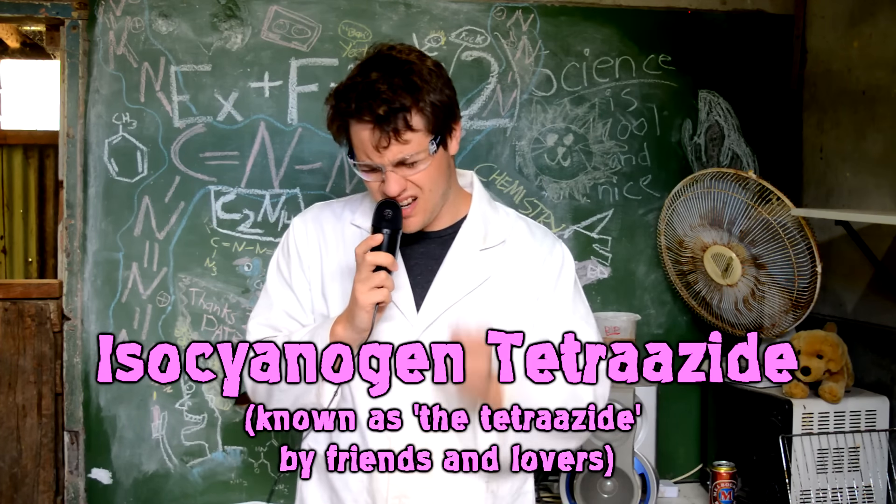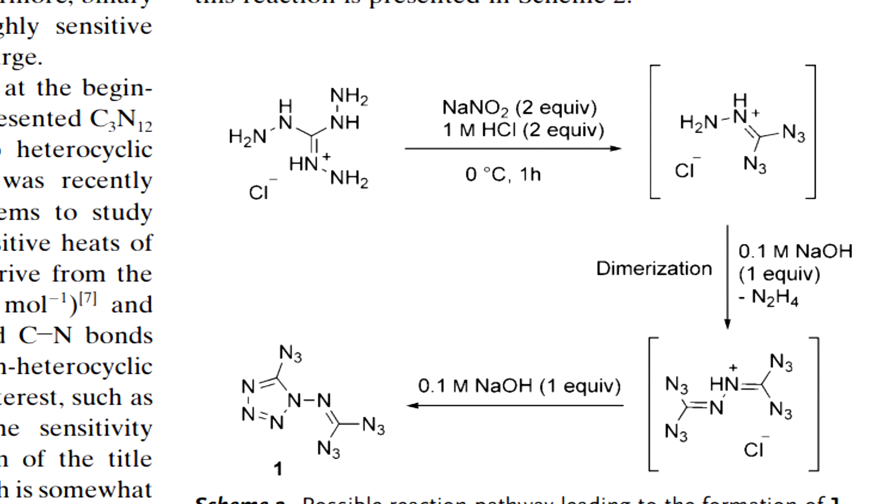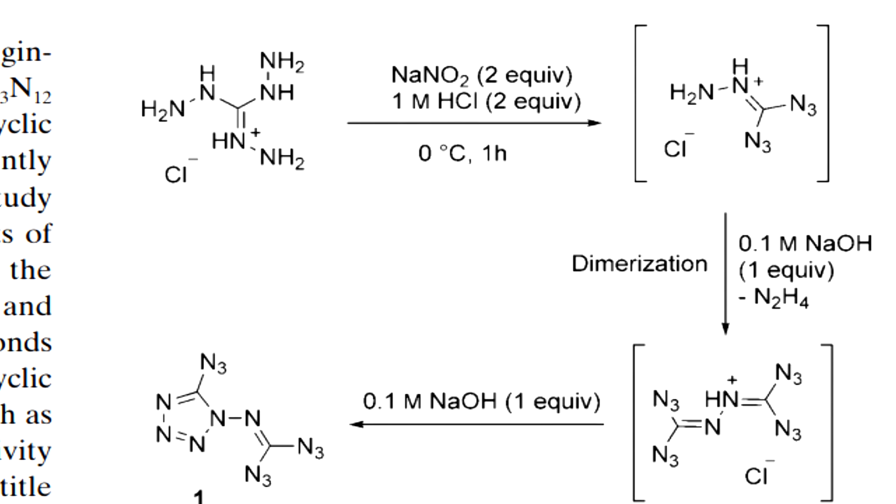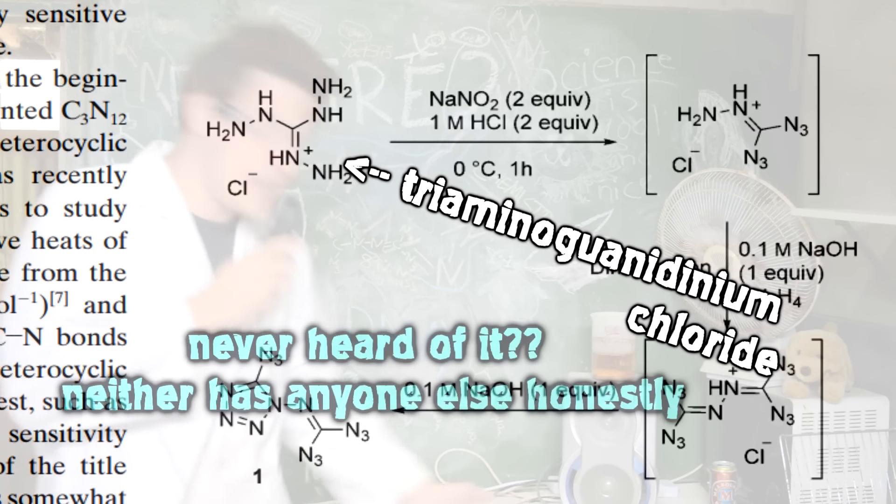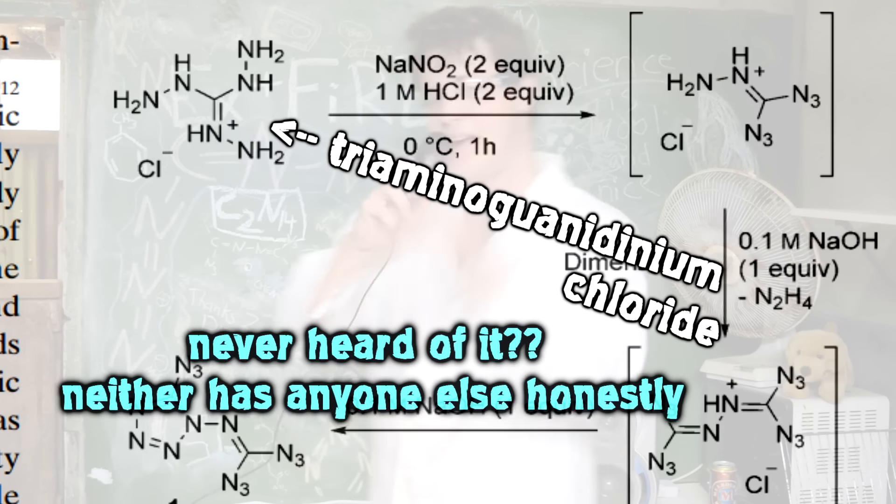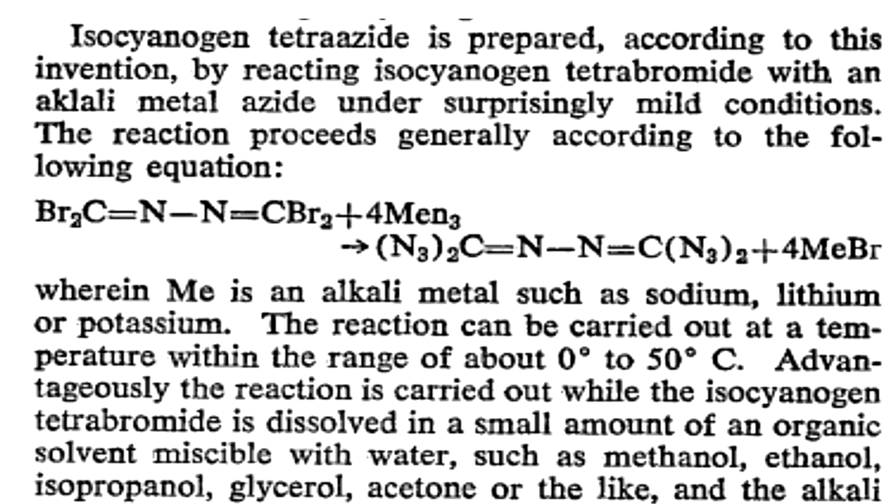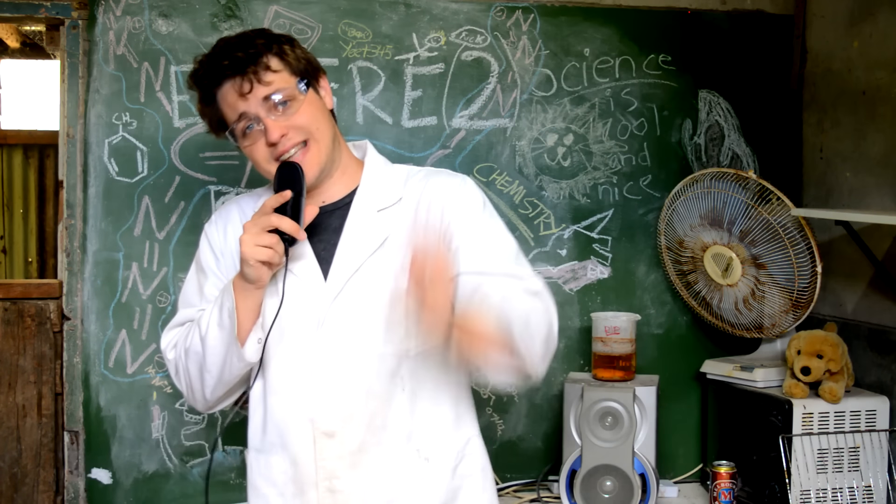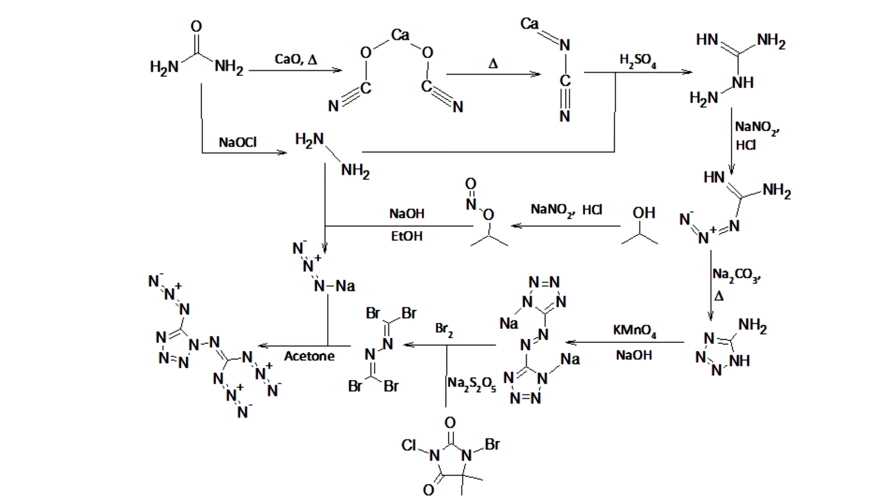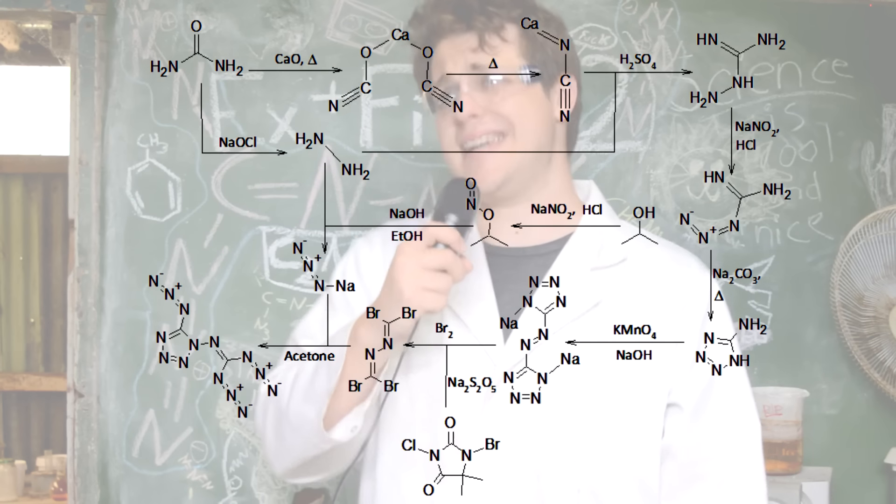All of this leads to an important point because in the 2011 paper that got the structure right for the first time the synthesis that was used was well hard. Not something that I could replicate in my shitty jam jar ridden rat fest of a shed here. However the patent for the 1961 explosive is much more accessible. The whole reaction scheme looks something like this. Easy as dicks.